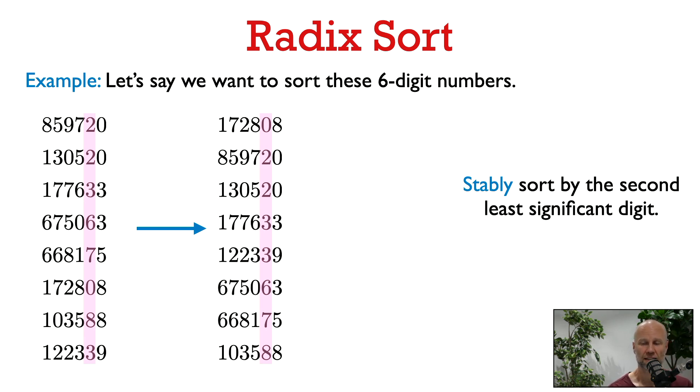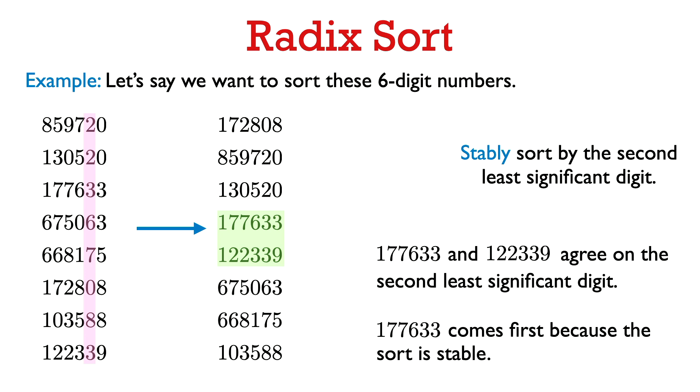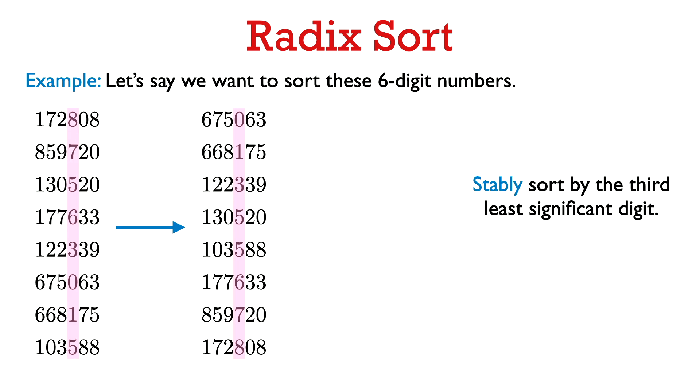We've used a stable sort to sort them by the second least significant digit, and it's very important that we use a stable sort here. What that ensures is that numbers that agree in the second least significant digit are going to be ordered by their least significant digit. For example, 177,633 and 122,339 agree on the second least significant digit — their second least significant digit is 3 in both cases. But because we use a stable sort, 177,633 is going to come first since it has the smaller least significant digit, and we already sorted by the least significant digit.